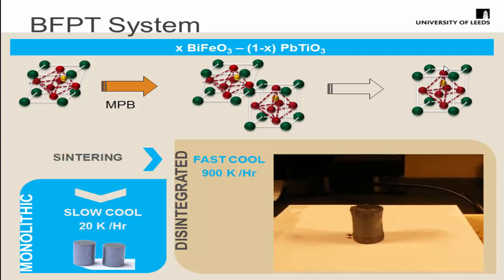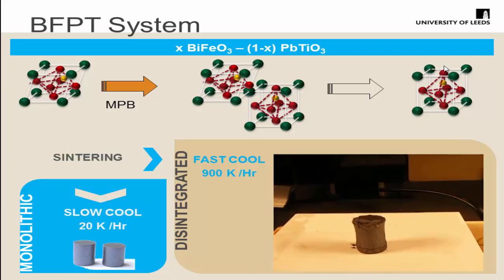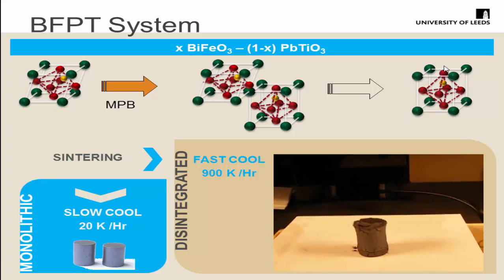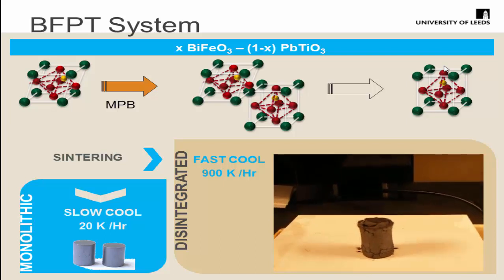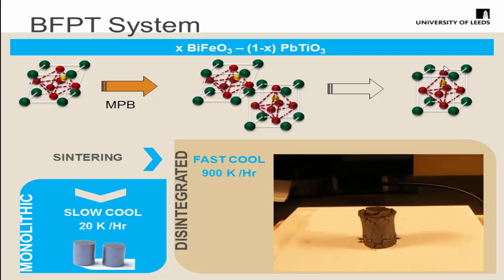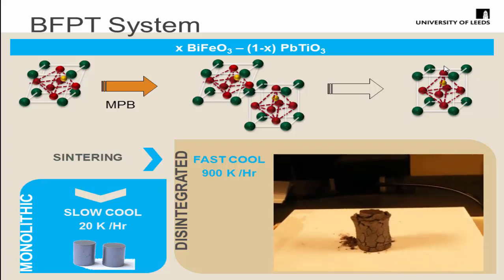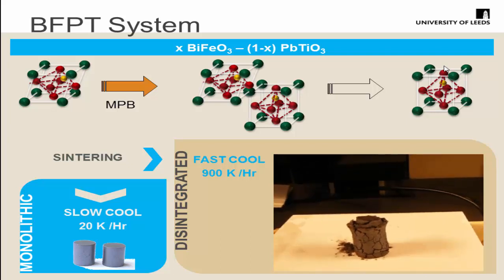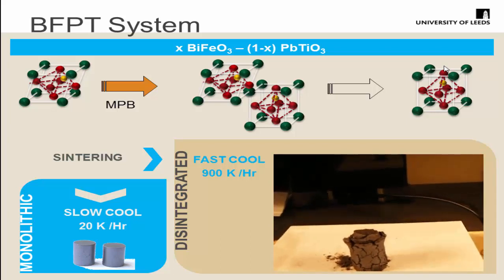If we slow-cool these materials, we get nice polycrystalline lumps of ceramic which are highly dense. Whereas if we take the material out of the oven and put it on a plate, it instantly disintegrates — this is an effect of the crystallographic strain being generated. The tetragonal form is much higher in volume and forms very quickly, so the grains are actually popping out, being forced out as they convert from rhombohedral to tetragonal. Processing is really important to hone in on the properties we want for our high-temperature materials. This goes from solid to a complete powder in something like two minutes.